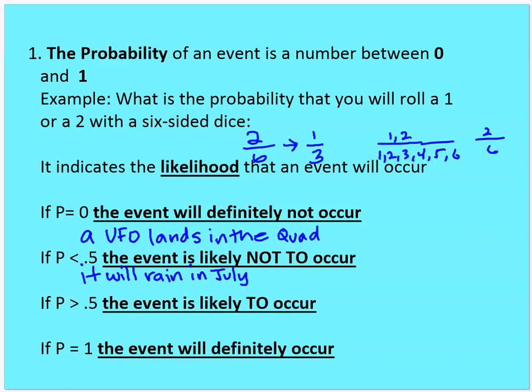Here's another example. What's the probability that you roll a 1 or a 2 with a six-sided die? There are six sides and each outcome is equally likely: 1, 2, 3, 4, 5, 6.